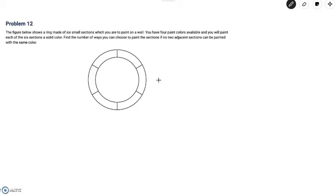So problem 12 reads: the figure below shows a ring made of six small sections which you are to paint on a wall. You have four paint colors available and you will paint each of the six sections a solid color. Find the number of ways you can choose to paint the sections if no two adjacent sections can be painted with the same color.